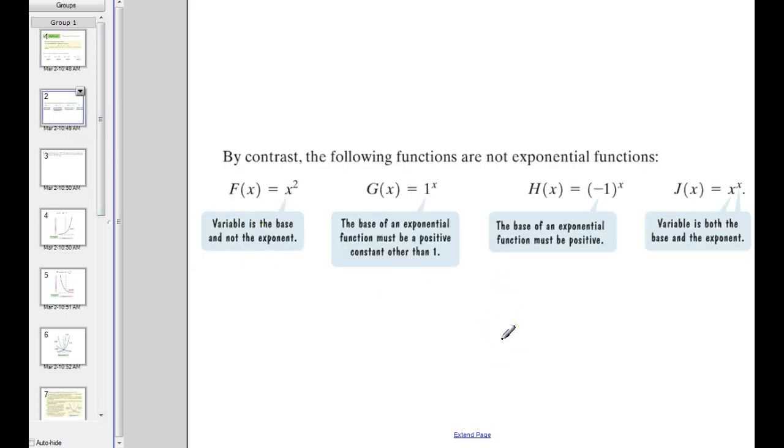And then these are just so you can see what something that's not an exponential function looks like. If the variable is in the base, the base is a variable. That's a polynomial, which we discussed back in Chapter 2. 1 to the x again, that's not exponential. That's just a horizontal. That's literally the same thing as g(x) = 1, and there's no x there. And then, again, we discussed the negative base. We can't have a negative base and raise it to a power and produce real output everywhere. And then x to the x. If the variable is the base and the power, that's no longer exponential either. We do need the variable to be in the exponent, but we can't have the variable be the base and the exponent.